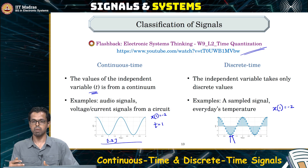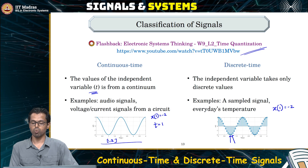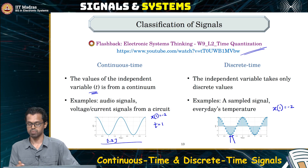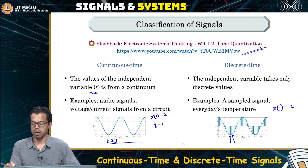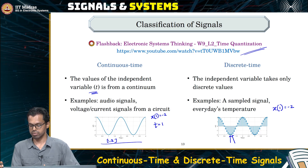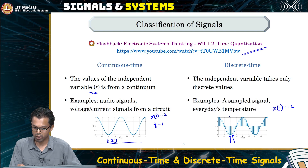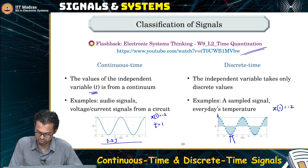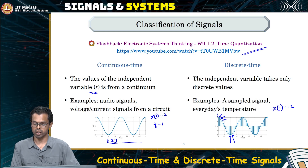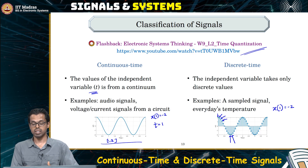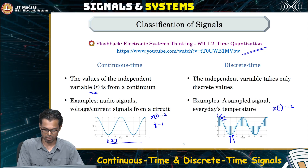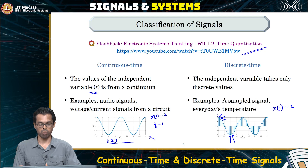Given a continuous time signal, you sample it at some interval, and once you sample it, what you get is a discrete time signal — a sequence of numbers. You have a first number, then a second number, then a third number, and so on. You get a sequence, whereas in continuous time you do not get a sequence — you get a continuum, continuously many numbers.